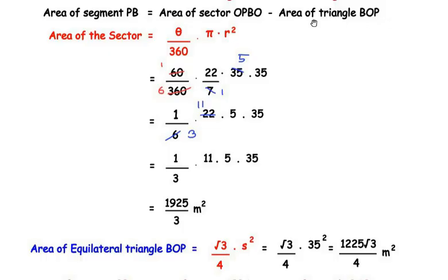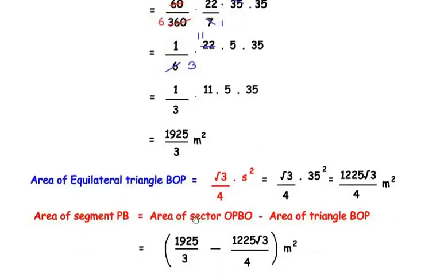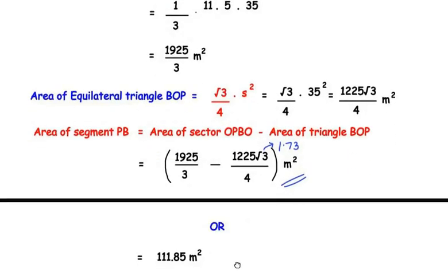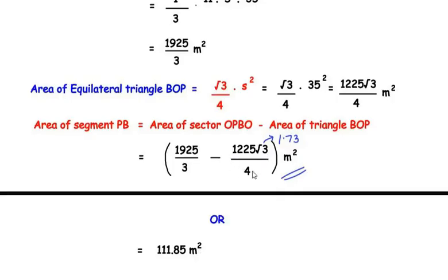Area of equilateral triangle BOP equals (√3/4) × 35², and 35² equals 1225, giving 1225√3/4 square meters. Now, area of segment PB equals area of sector OPBO minus area of triangle BOP, which is 1925/3 minus 1225√3/4 square meters. Converting to decimals using √3 ≈ 1.73 gives approximately 111.85 square meters. Both forms are acceptable answers.